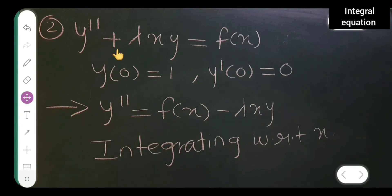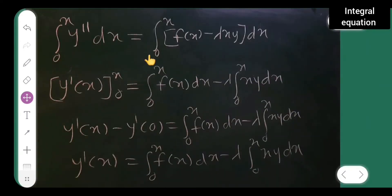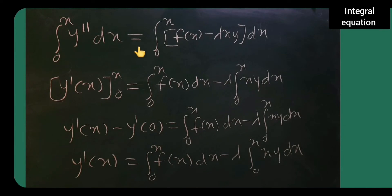Starting the solution: y double dash is equal to f of x minus lambda x y — I've taken the lambda x y term to the other side, so it becomes negative. Now I integrate both sides with respect to x from 0 to x: integral from 0 to x of y double dash dx equals integral from 0 to x of (f of x minus lambda x y) dx.